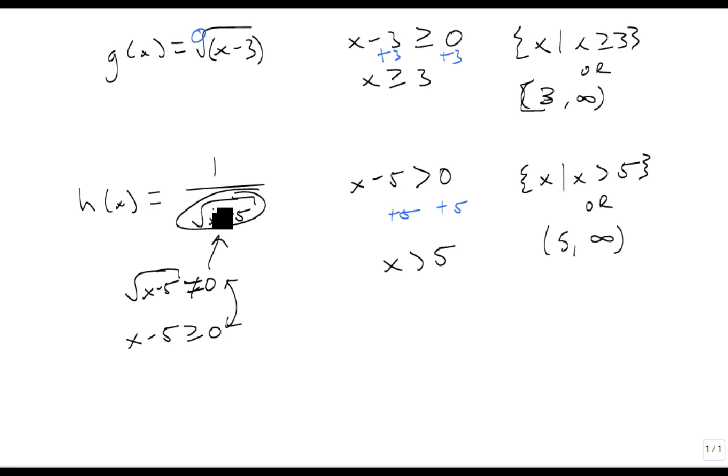One final example. Suppose that p(x) = √(x²-x-6). Well here, remember that because it's an even root, what's inside can't be negative. So it's got to be greater than or equal to zero.